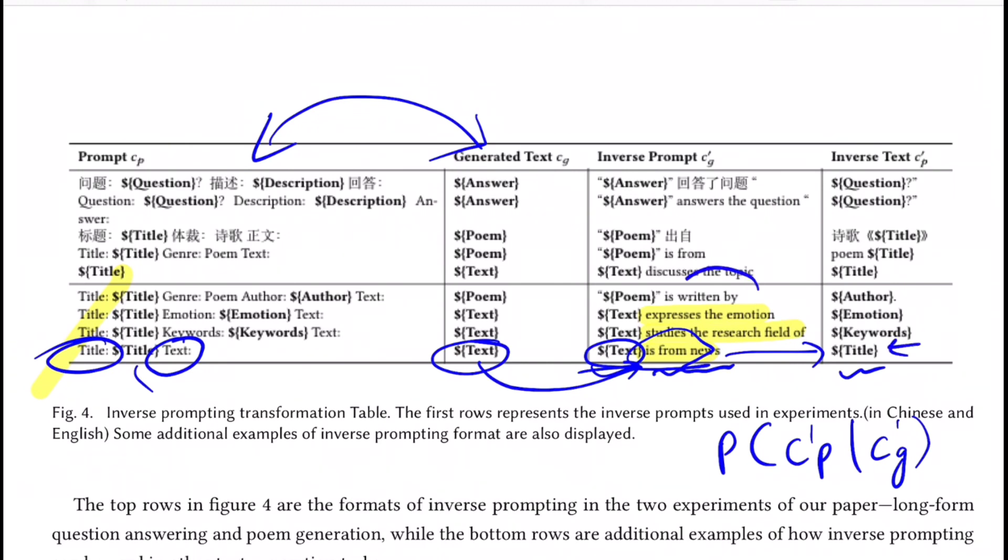For example, if you see this one, you have title, then the actual title, then genre is poem, author information you have, and then you have the text. Now the system generates a poem. The inverse prompt for this becomes poem is written by and now the system is supposed to generate the author name. Here again, we could have prompted it to kind of generate the title, but this is one of the ways as I said, it depends on the aspect of the prompt that you're targeting to maintain the relevancy.